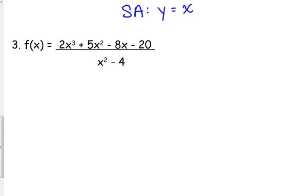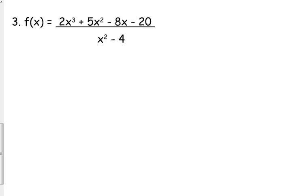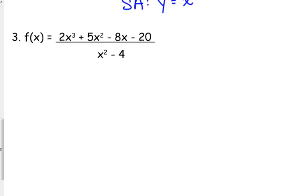No horizontal asymptote. The degree of the numerator is 1 degree greater than the denominator. Holes. We need to factor. How do we factor that numerator? Grouping.